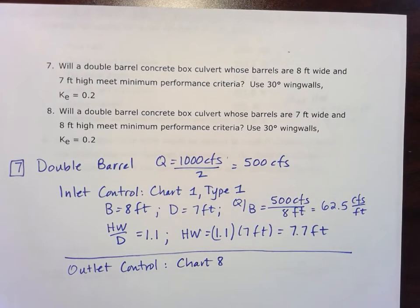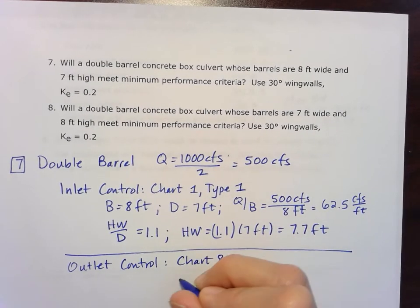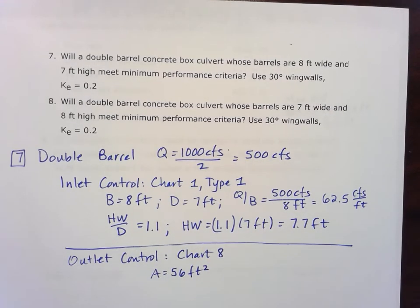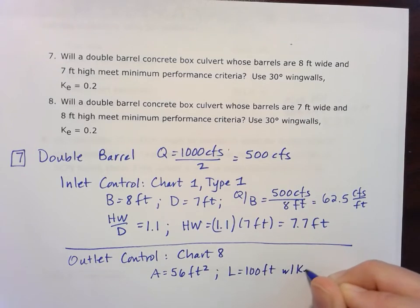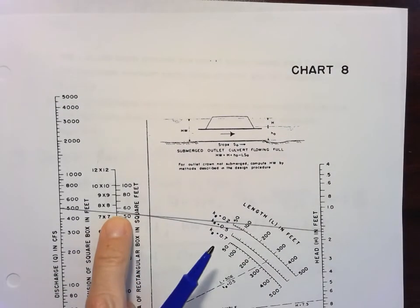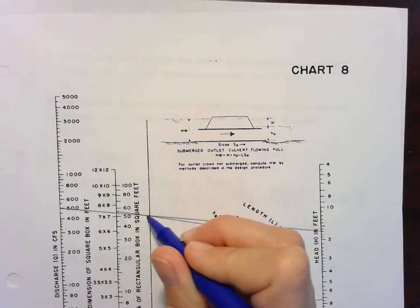So we'll go to Chart 8. For our first, we're going to have to use our turning line here. So we'll take a look at our area. In this case, the area of this box is going to be 56 square feet, 8 by 7. And our length of our culvert is 100 feet, given in the problem statement with that KE of 0.2. So let's go ahead and connect those two first. So we'll start on the inside with 56 and then connecting it down to that 100 on the 0.2 line for KE. So we've got our turning point right here on the line.